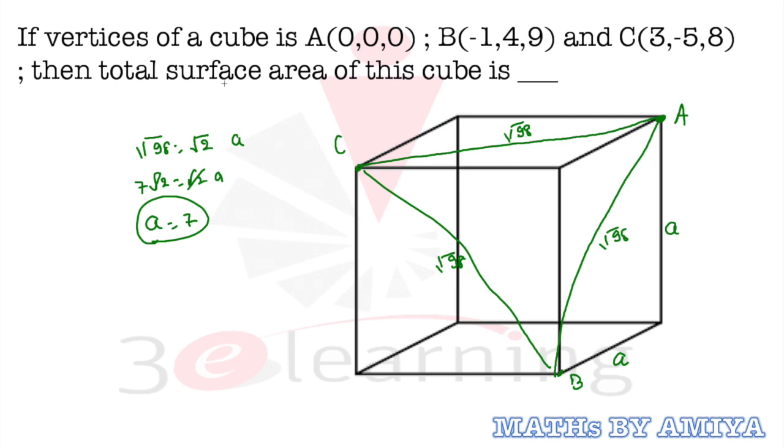And we need to find the total surface area, which is 6a² = 6 × 7² = 6 × 49 = 294. And this is the answer to this question.